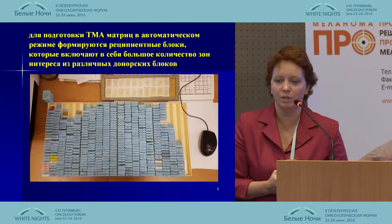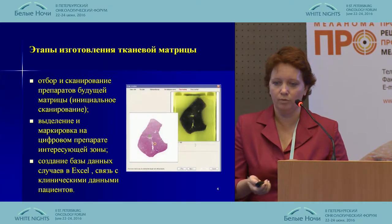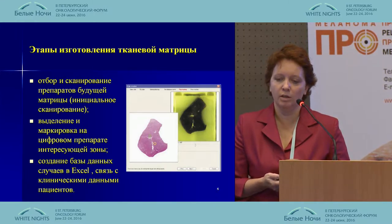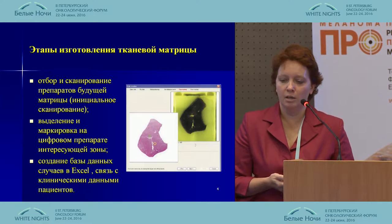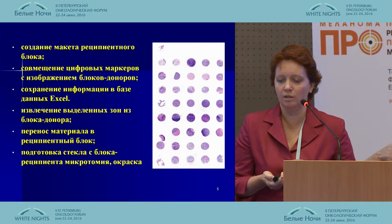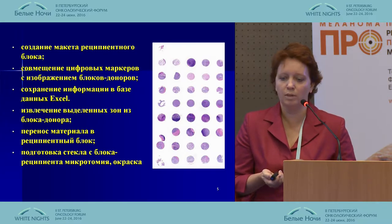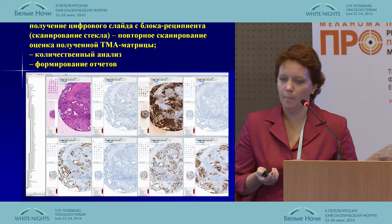To prepare TMA in automated regime, we have recipient blocks that include large zones of interest from different donors' blocks. The stages of creation and development of matrices include primary scanning, labeling of the zone of interest, database formation in Excel and its connection to clinical data of patients, creation of templates of recipient blocks, digital markers, storing this information in a database, and transfer of material to the recipient block, as well as the coloring process.